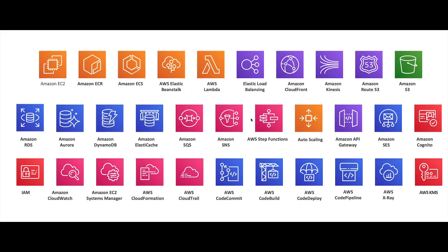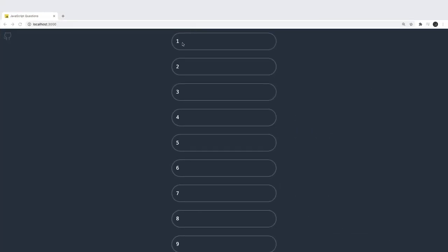AWS KMS (Key Management Service) is used for key encryption for your resources and for data in transit within the network. There are hundreds of services available on AWS and getting familiar with these is our primary agenda. The quiz questions will cover things like what kind of EC2 instance you need — reserved instance, spot instance — and the different categories of compute and deployment platforms available for the Cloud Practitioner exam.